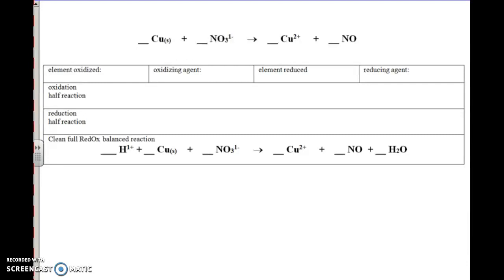So with this problem, the first thing it says is that we should write the oxidation numbers above each of the elements. So pause this and go ahead and write the oxidation numbers and then see if you are correct. So we've got a 0 there. Each oxygen is a 2 negative, but there's 3 of those oxygens, so that's a 6 negative. The whole thing has to add up to 1 negative, that's where that comes from. 1 negative.